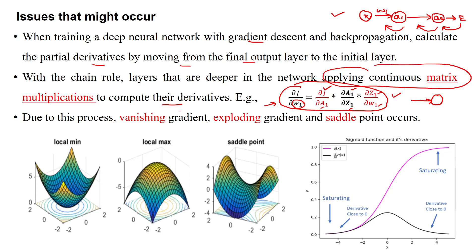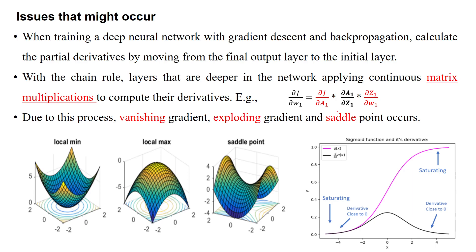When you have more number of layers, you apply continuous matrix multiplications to compute the derivatives for each and every parameter in the network. With a deep neural network, more terms are added as the number of layers increases. This chain of gradients grows in count, and due to that there is a possibility of a vanishing gradient problem, exploding gradient problem, or saddle point problem.